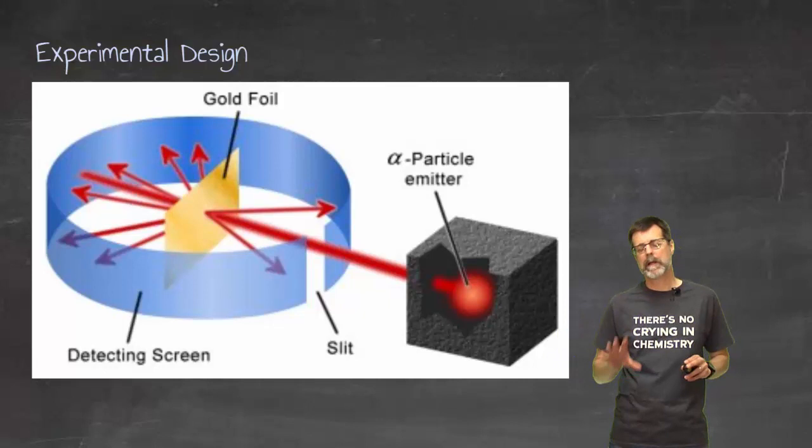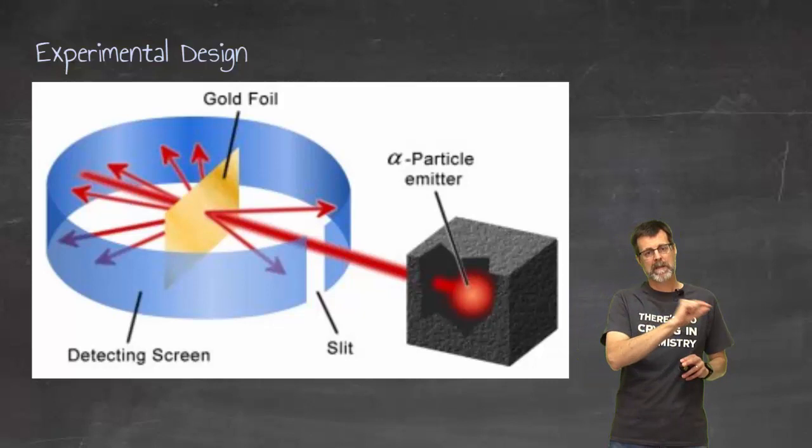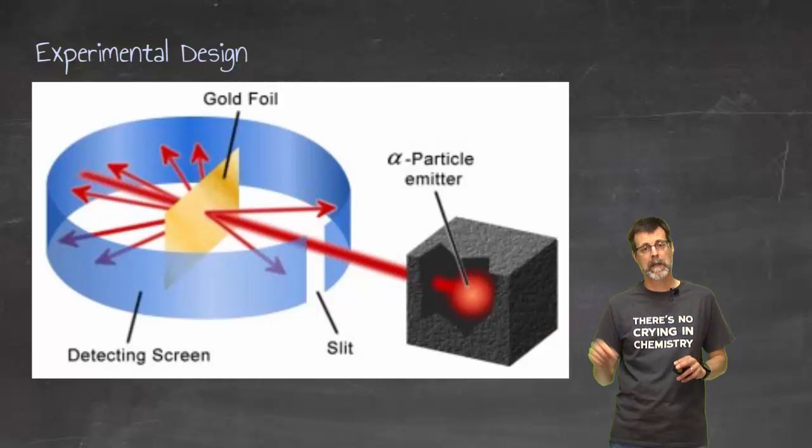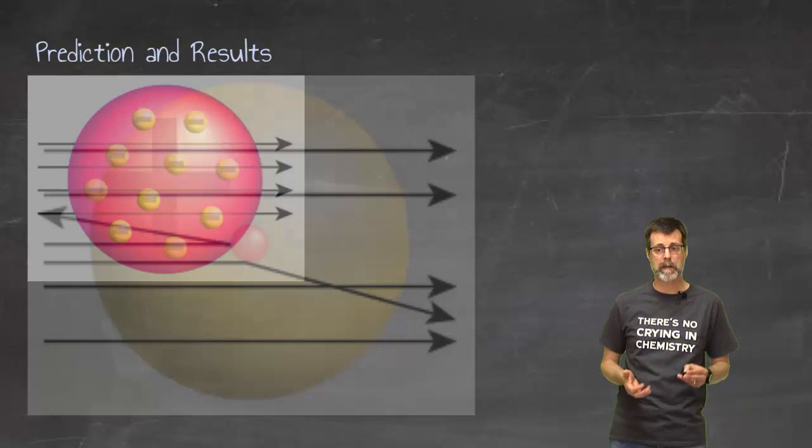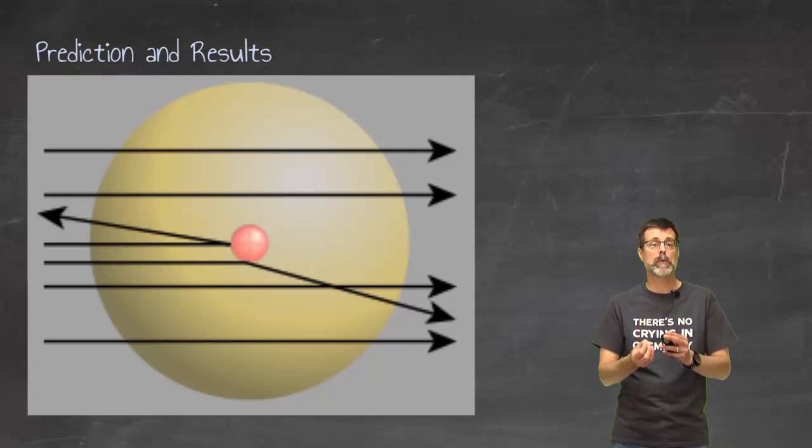What he actually got was these lines going all over the place. We'll explain that another time, but what that meant was his prediction based on the theory was wrong, or the theory could not properly predict. So we had to change the atom. What he came up with was to reject the Thompson model and come up with this. This is getting a whole lot closer, but now we have a nucleus in that atom.